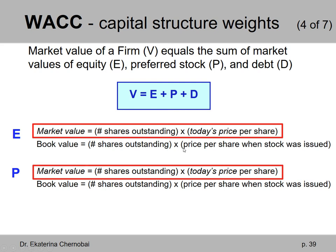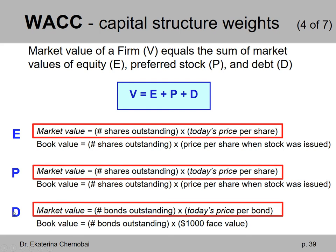The same applies to the market value of preferred stock — capital P in our firm value formula. We need to multiply the number of shares outstanding by today's price per share, rather than the price per share when the stock was issued, which would be the book value. For bonds or debt — capital D, the third component — the market value equals the number of bonds outstanding multiplied by today's price per bond. Multiplying by the $1,000 face value instead gives the book value, which is static over time, unlike market values, which fluctuate as stock prices and bond values change.